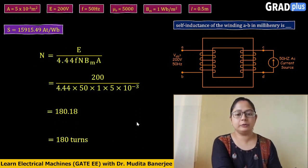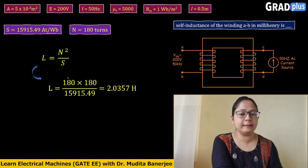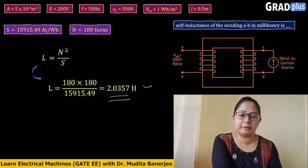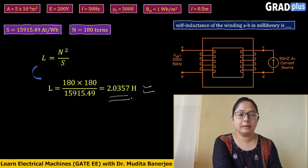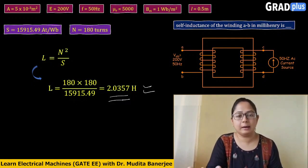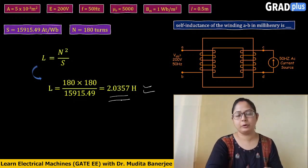Substituting into L = N² / S: L = (180 × 180) / 15,915.49 = 2.0357 henrys. Since the answer is required in millihenry, multiply by 10³.